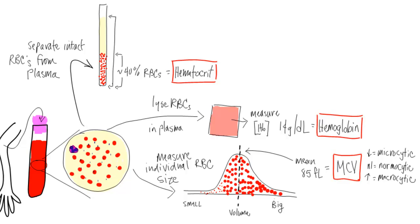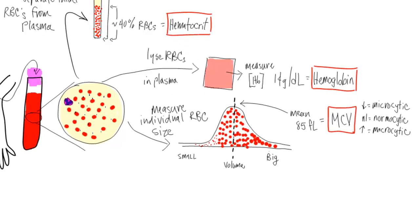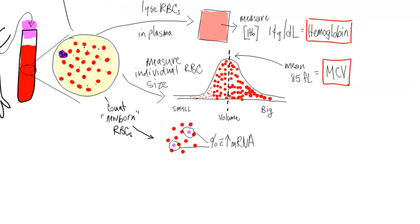In the next test, we look to see how well the bone marrow is responding to the anemia by determining how well it is doing in pumping out new young red cells. In this test, a dye is used to identify young red cells, ones that still have a lot of mRNA in them.